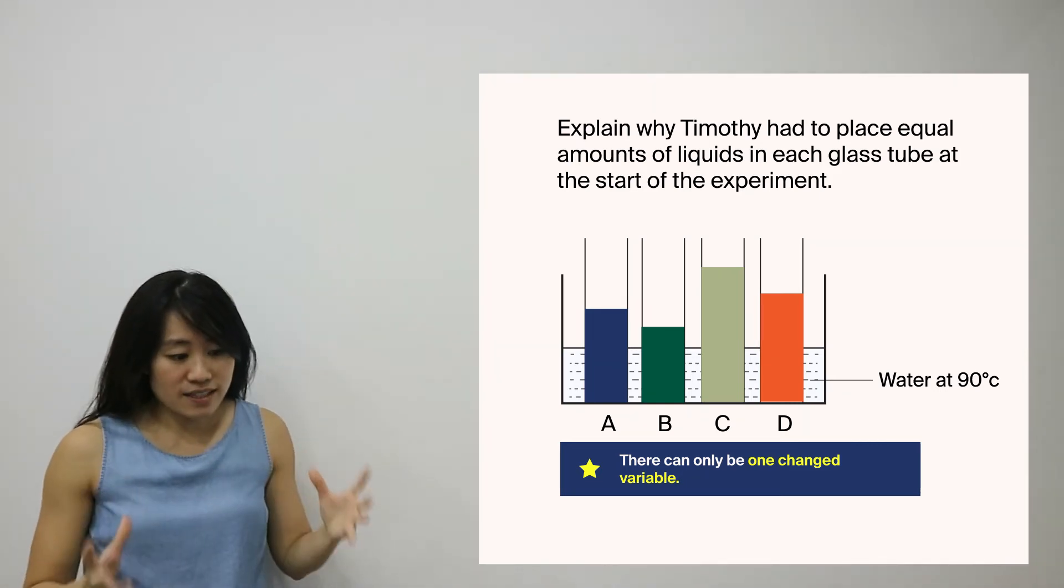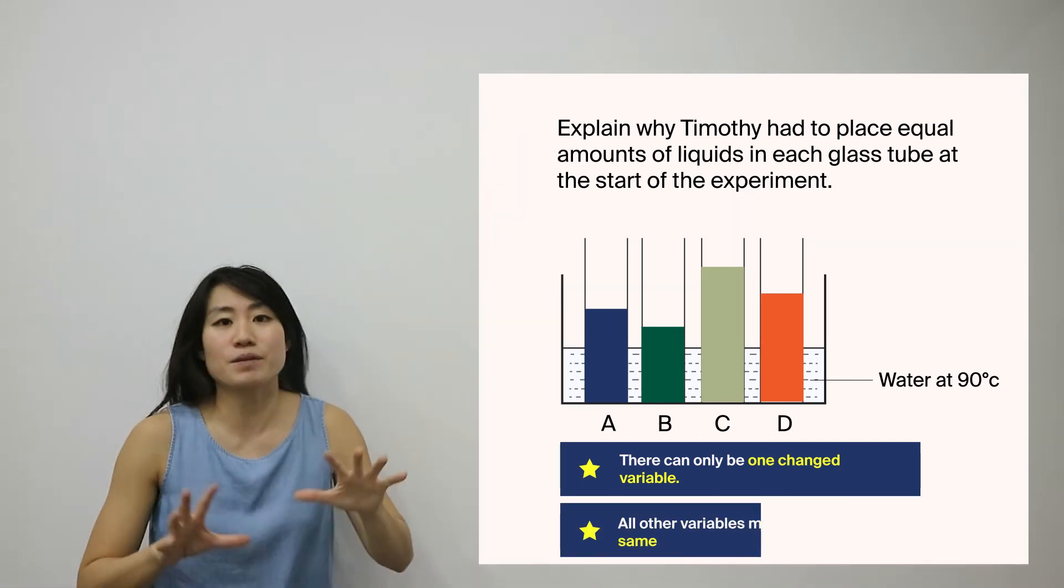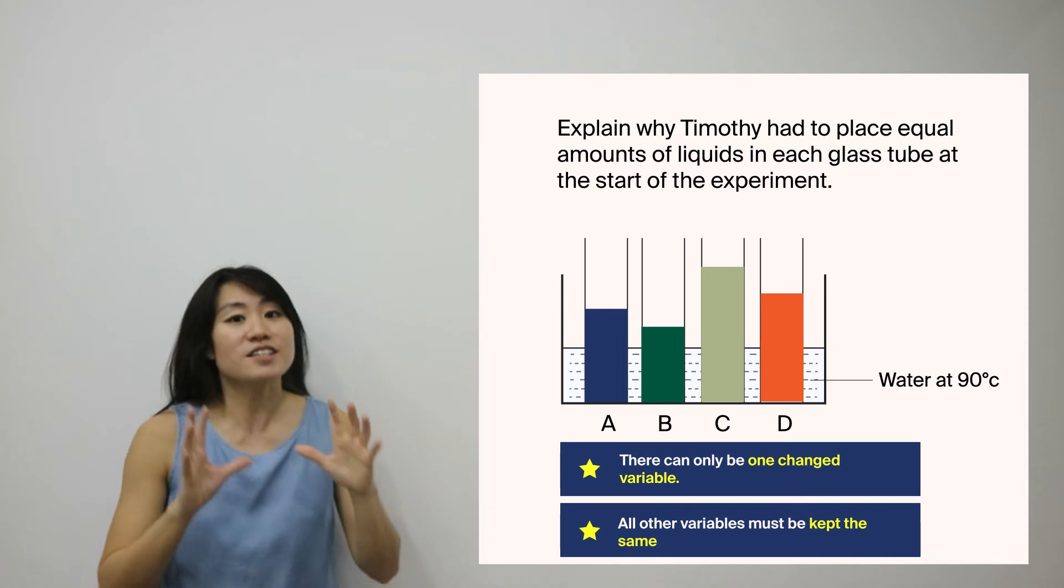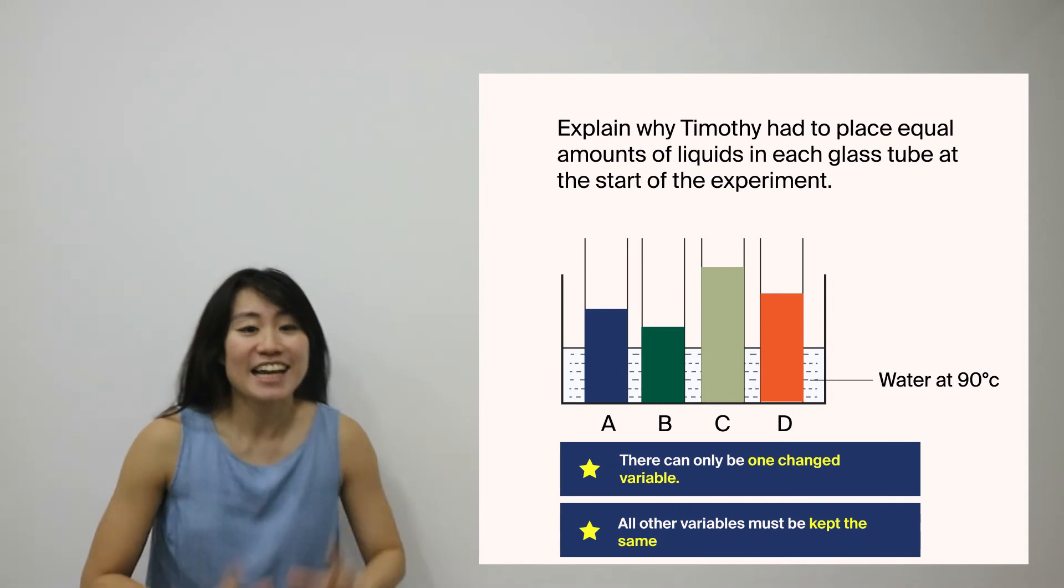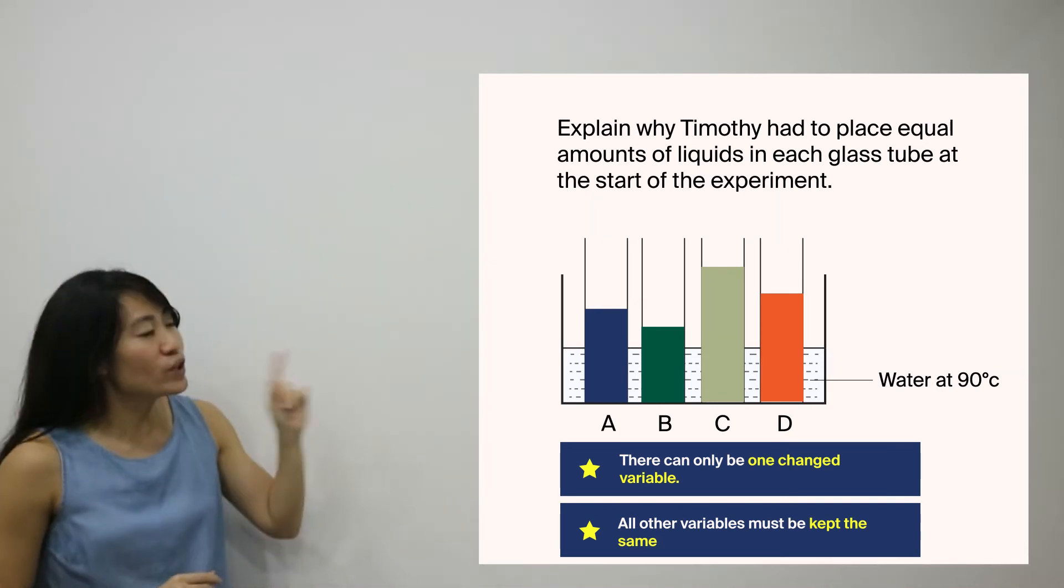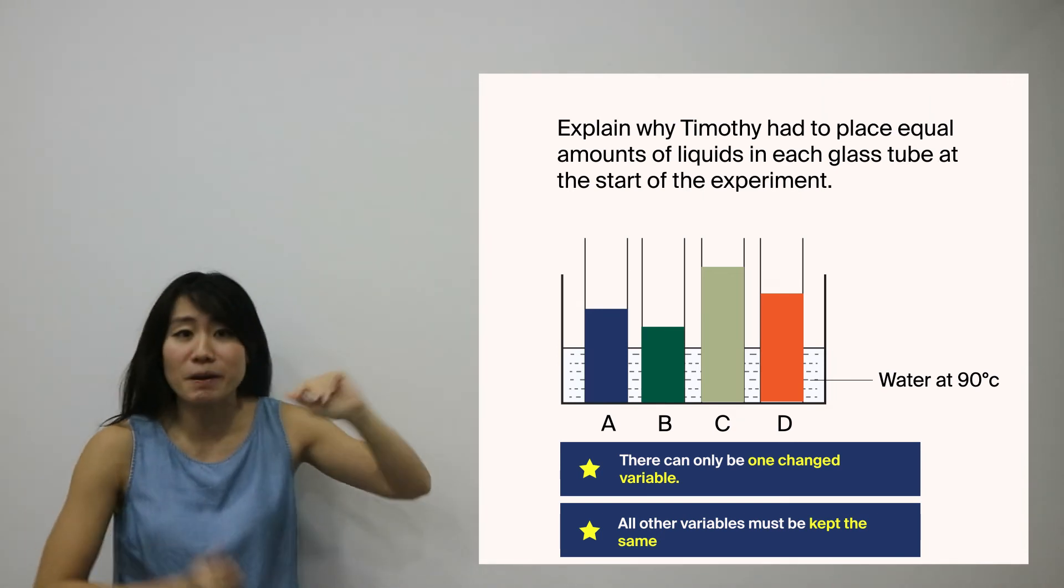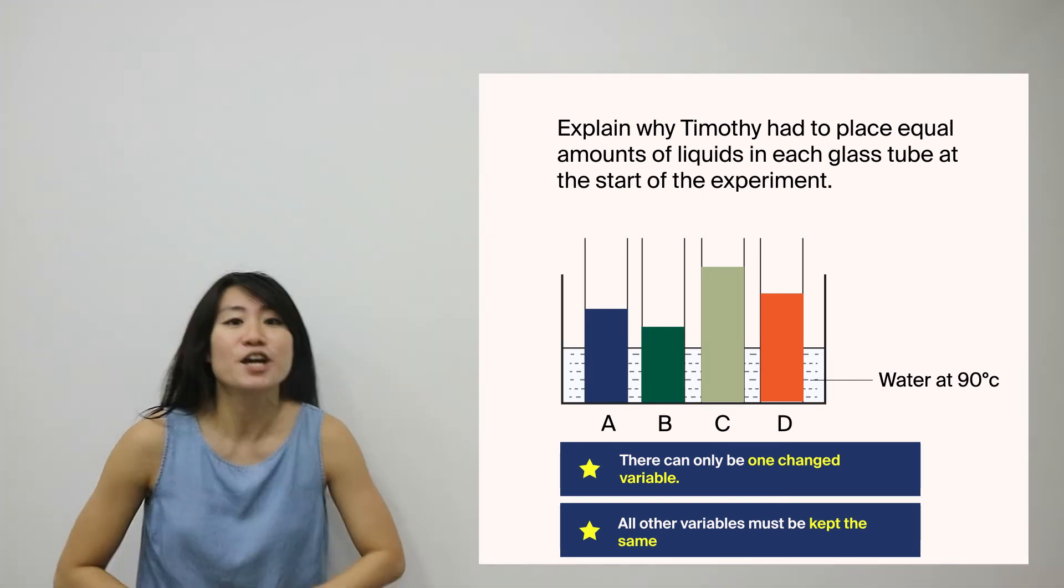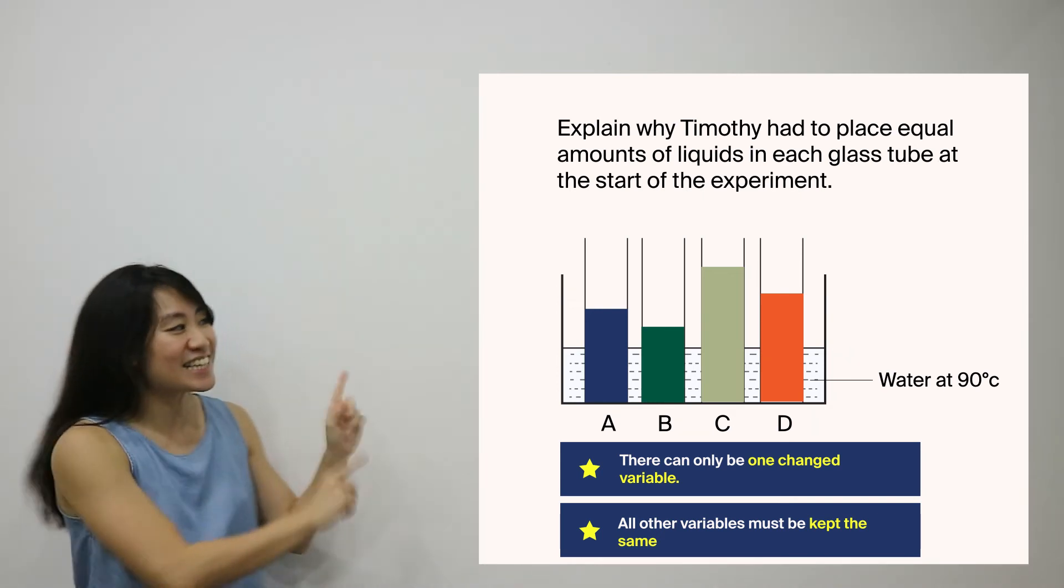Now in this experiment, all other variables must be kept the same. So this is to ensure that the experiment is a fair one. Now the moment you have identified which type of question this belongs to under the seven experimental setup questions, I can now show you the answering technique to answer this question.